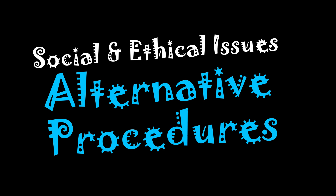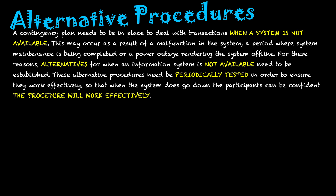Social and ethical issues — alternative procedures. In relation to alternative procedures, a contingency plan needs to be in place to deal with transactions when a system is not available. This may occur as a result of a malfunction in the system, a period where system maintenance is being completed, or a power outage rendering the system offline.